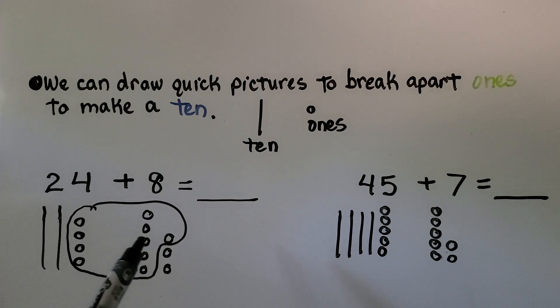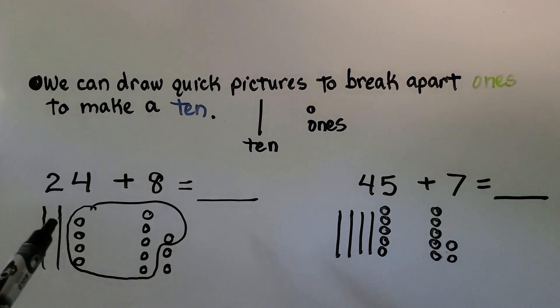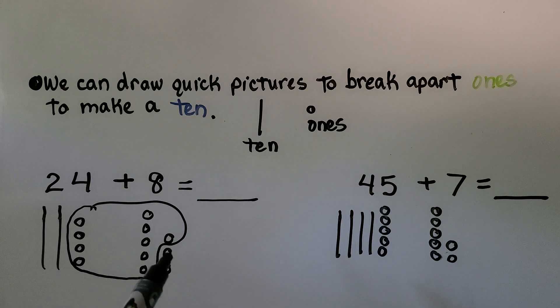And now we've made a ten. We have 4, 5, 6, 7, 8, 9, 10. Now we have 1 ten, 2 tens, 3 tens, and 2 ones. 3 tens, 2 ones is equal to 32.